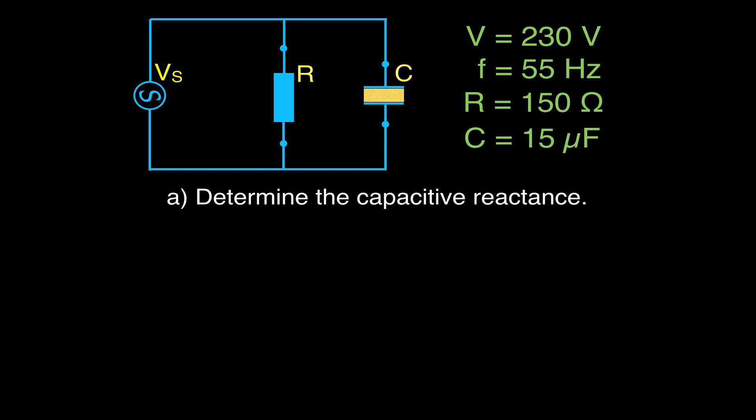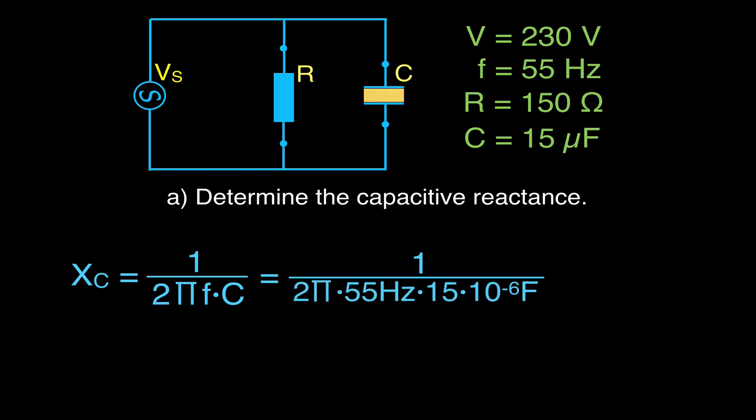Let's get started by determining the capacitive reactance. We need to get the resistance of the capacitor in an alternating voltage, using the equation Xc = 1 over 2π times the frequency times the capacitance. That's 1 over 2π × 55 × 15 × 10⁻⁶ — don't forget to convert microfarads to farads. If we do that, we get that the capacitive reactance is 193 ohms.